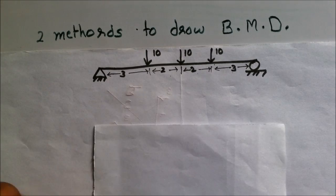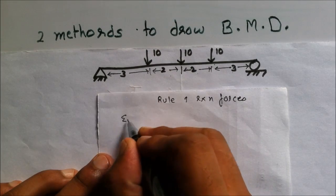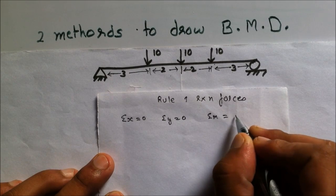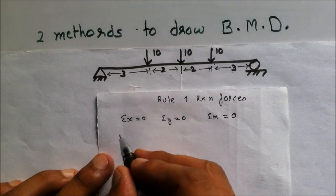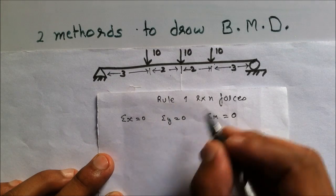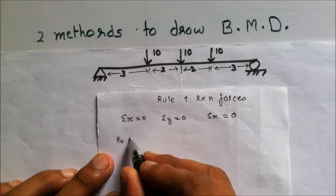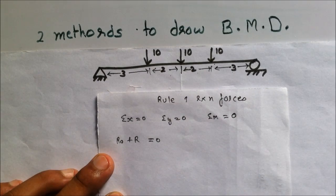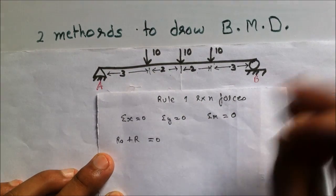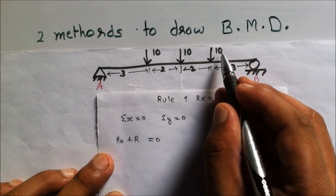The first step is finding reaction forces using equilibrium equations. The summation of forces in the x direction equals zero, the summation of forces in the y direction equals zero, and the summation of moments equals zero. There are no forces in the x direction, so that is automatically zero. In the y direction, reaction RA plus reaction RB equals zero when considering the reactions.